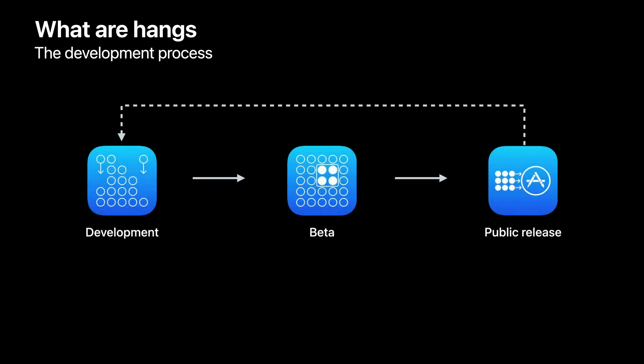The app development process can be broken down into three phases. First, developing the latest app version at desk using Xcode. Then, testing the app and collecting feedback in a beta environment without Xcode — for example, you may have an app version that's development signed on your device or distributed through TestFlight. Finally, releasing the latest app version on the App Store. Even for the most proactive developers, new hang issues can arise at any phase, so it's important that you know the tools to resolve them during each one.